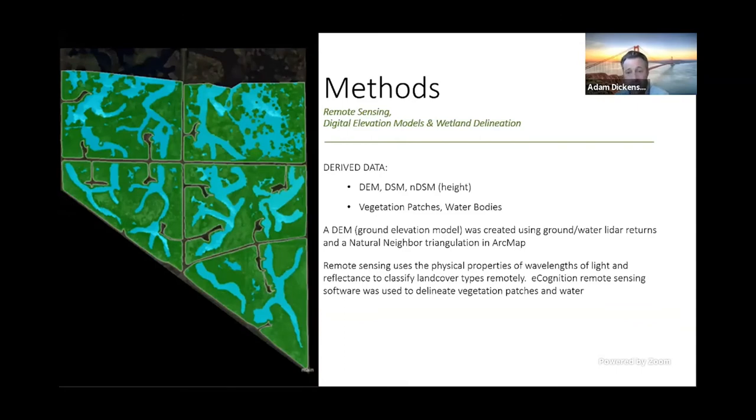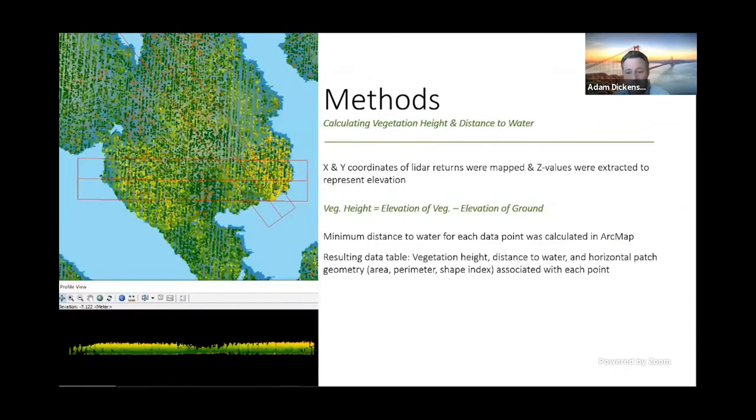So from the LIDAR, I created a DEM or a ground surface and other elevational models in ArcMap. And I used eCognition, which is a remote sensing software to delineate vegetation patches versus areas of water. And just to note, remote sensing uses the physical properties of light and object reflectance to classify land cover remotely. This is great because I was never able to visit the site. So I mapped the horizontal X and Y coordinates of the LIDAR returns in ArcMap. And then I extracted the Z value or the elevational value of each LIDAR point. So vegetation height then equals the elevation of vegetation minus the elevation of the ground. The difference is vegetation height. Then in ArcMap, I calculated the minimum distance to water for each vegetation point. The result was vegetation height and distance to water for each data point, as well as the size of the patch that the vegetation was within.